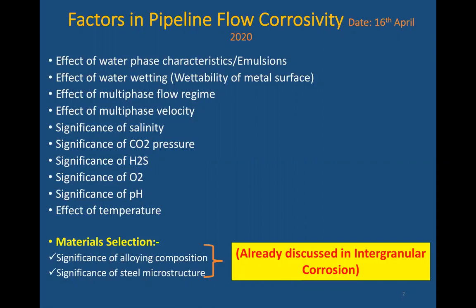Finally, we'll see material selection. The alloying composition in the metal — as we saw, galvanic corrosion may happen — and also the steel microstructure. You can remember intergranular corrosion and transgranular corrosion; based on the microstructure, there are different types of corrosion that may happen.